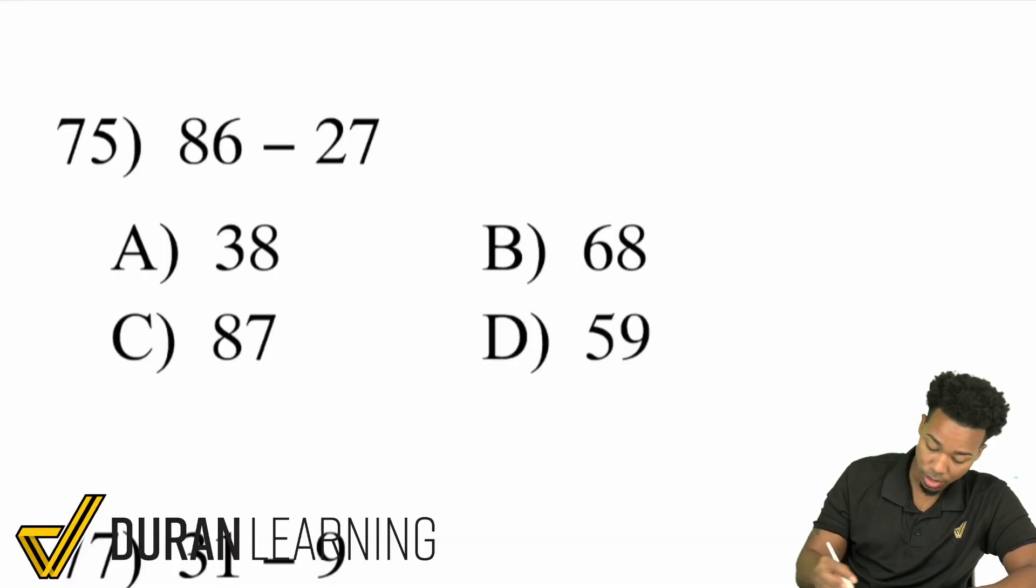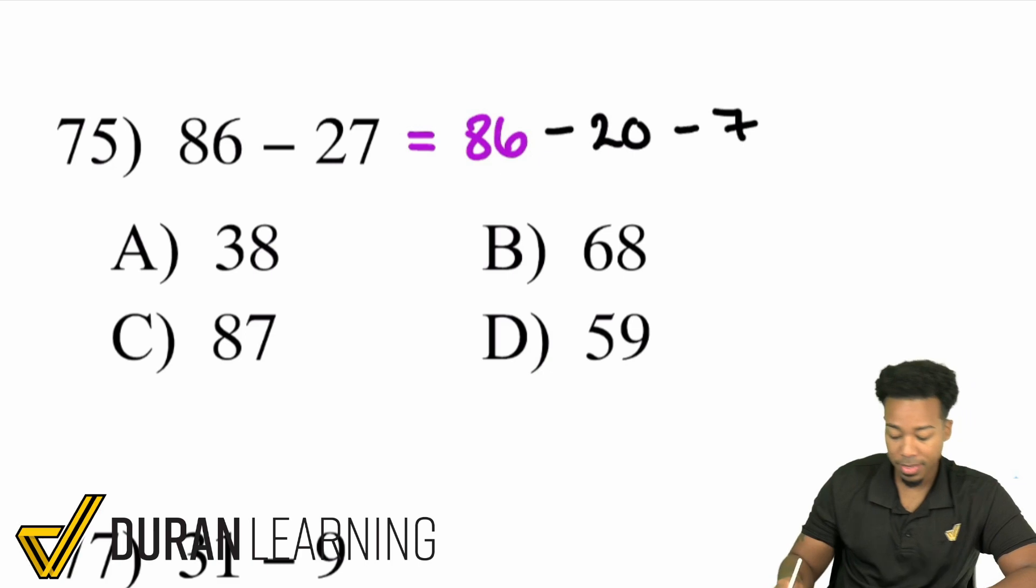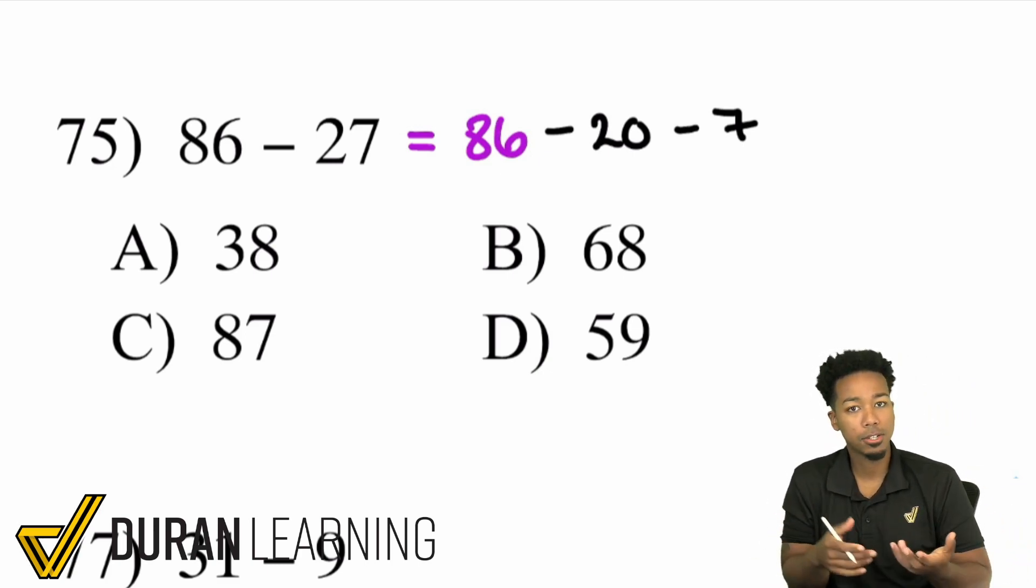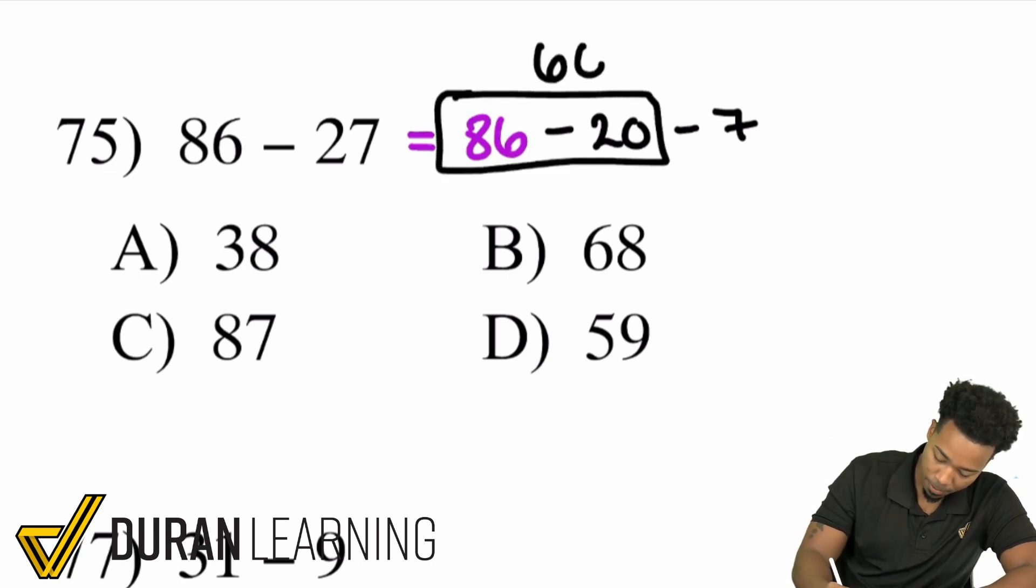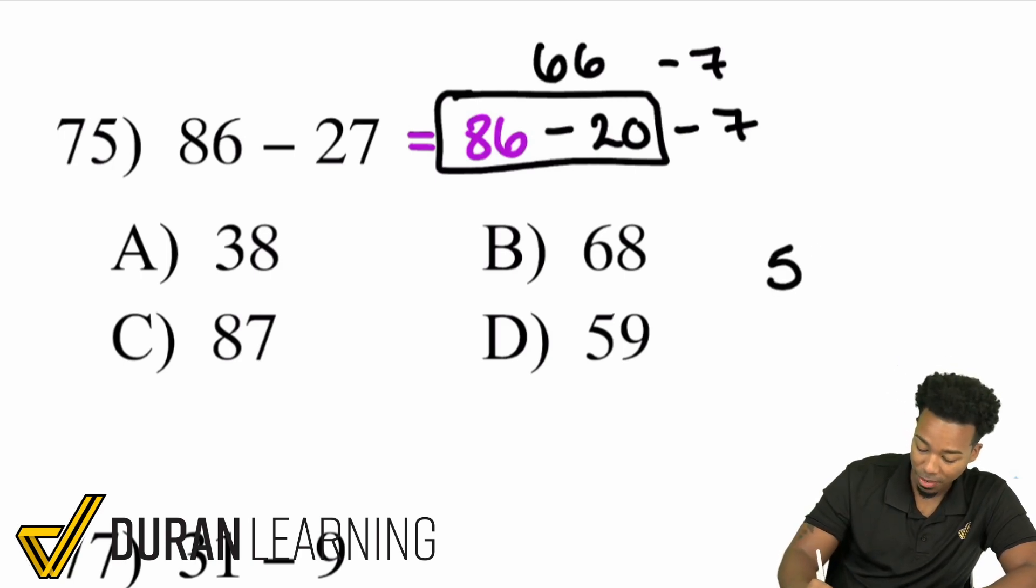What we can do here is we can go ahead and change this to 86 minus 20 and then minus 7. That way you can do this in your head. So think of it 86 minus 20 that's going to give us 66. That's going to give us 66. And then 66 minus 7 again in your head well we should be able to realize that that is 59.